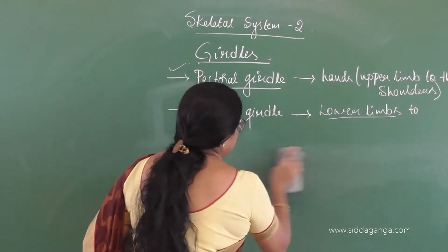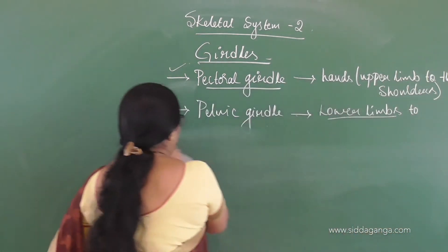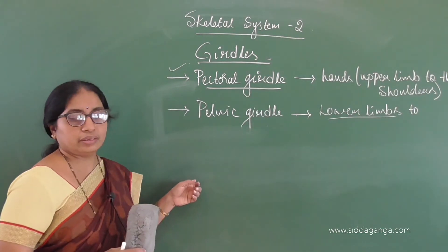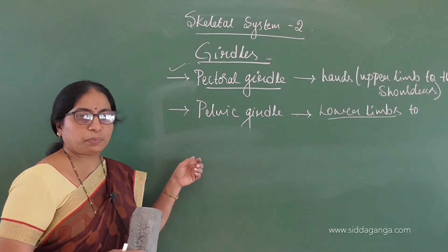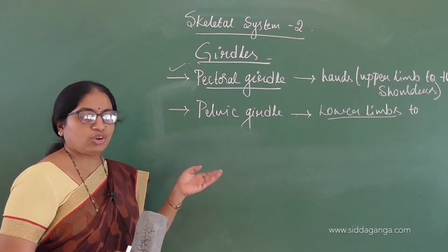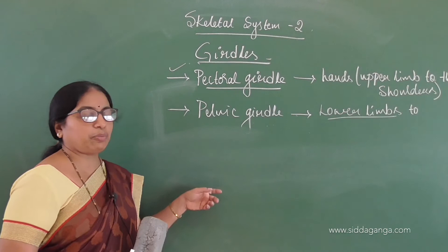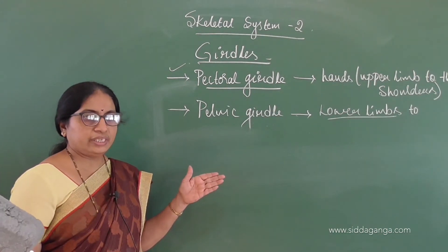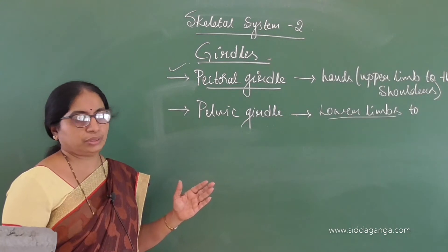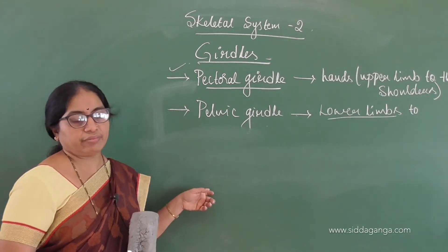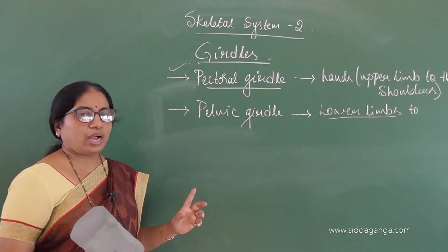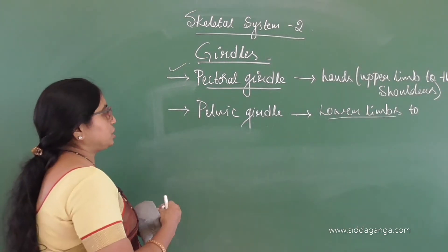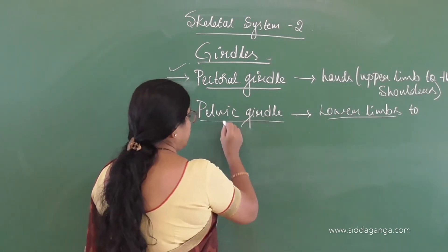The girdles are made up of two halves. The scapula and clavicle are present on one side of the body, and on the other side you also have a scapula and a clavicle. So the entire pectoral girdle is made up of two halves, one half containing one scapula and one clavicle, making two scapulae and two clavicles in total.